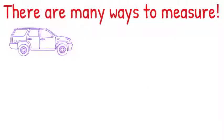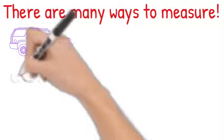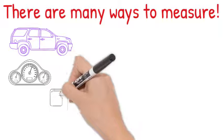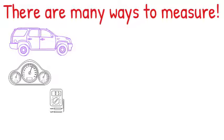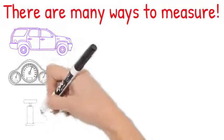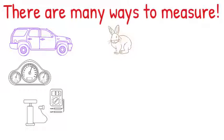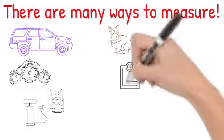There are many different ways to measure. We could measure how fast the car can go or the power of the engine. We could measure the air pressure in the tires. At the veterinarian's office, we measure the rabbit's weight,